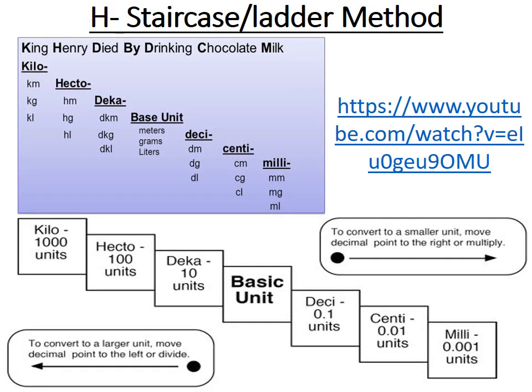There is another method you can use to convert from one unit to another — it's called the staircase method. You create a staircase using the base unit and the different prefixes, then count how many steps you're taking up or down the staircase. If you're going down the staircase — from the base unit to a smaller unit — you move the decimal to the right or multiply by 10. If you go up the staircase — to a larger unit — you move the decimal to the left or divide by 10. You can watch a linked video to go over that concept in more detail.